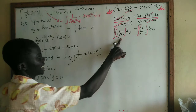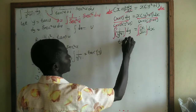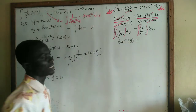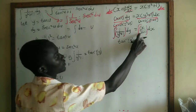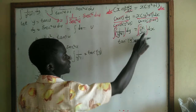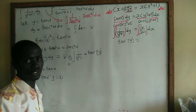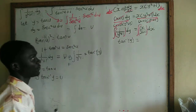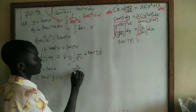Now we have tan⁻¹(y) on the left. We still need to integrate x/(x + 1) on the right. Since the degree of the numerator equals the degree of the denominator, we cannot integrate directly — we need to use partial fractions, so let us break this into partial fraction form.